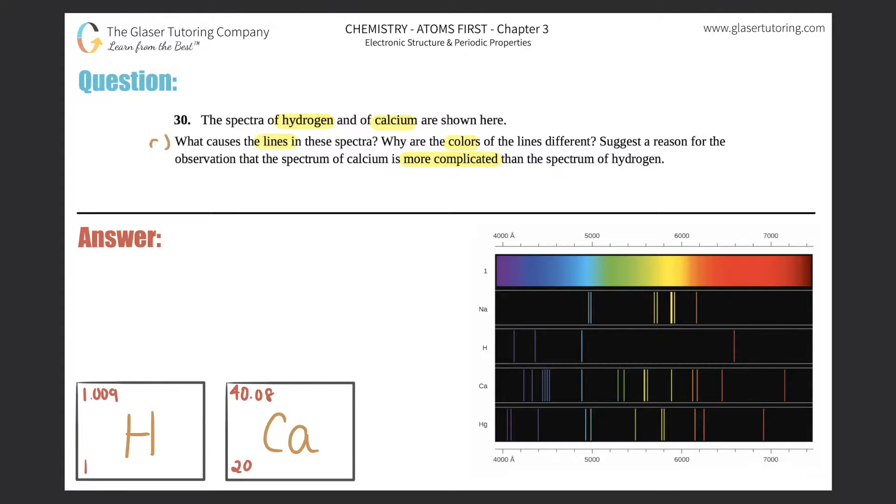So I'll say this is part A, this is B, and this is C. Let's answer the first question first. For part A, it says what causes the lines on the spectrum, and they're talking about these lines right here.